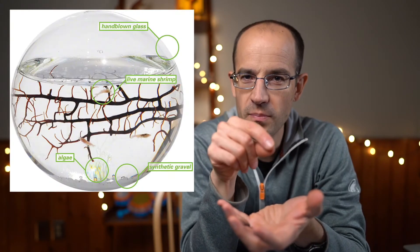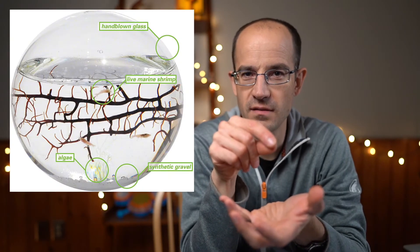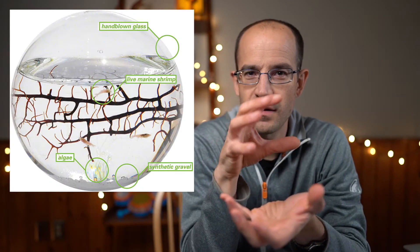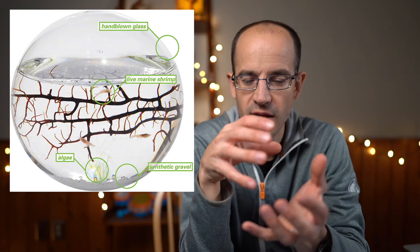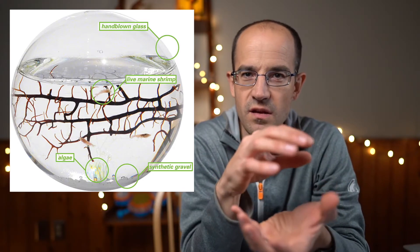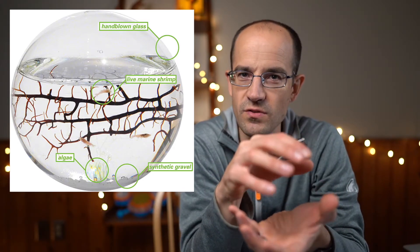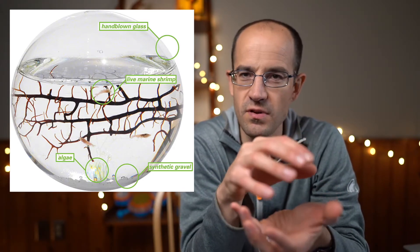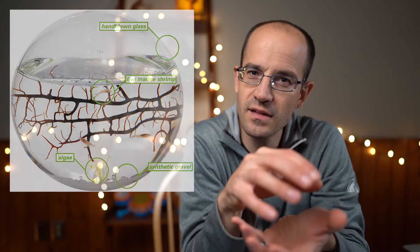There are lots of really neat gifts out there. One of them is a glass sphere with a little shrimp living inside it. They sell them and it's completely enclosed, and somehow that shrimp survives — it doesn't run out of oxygen. How does it do that?